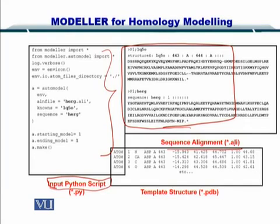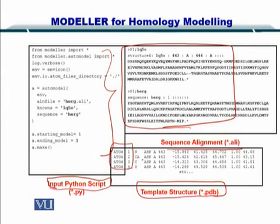Lastly, you have to input the PDB for the template. As you can see, atom number 1, 2, 3, 4, alpha carbons — their coordinates are given here. So these are the three inputs that you provide to the Modeler software.